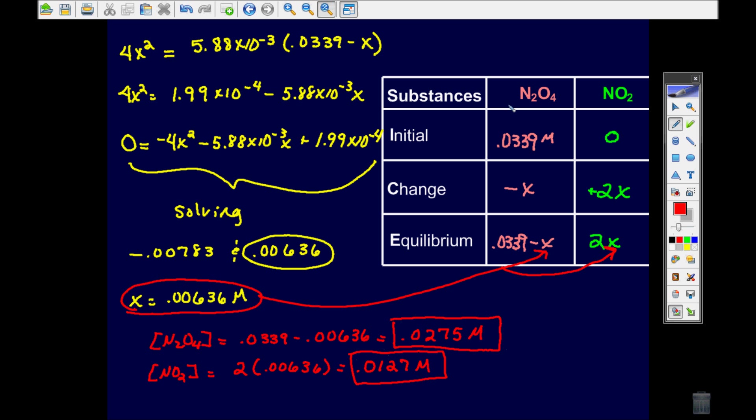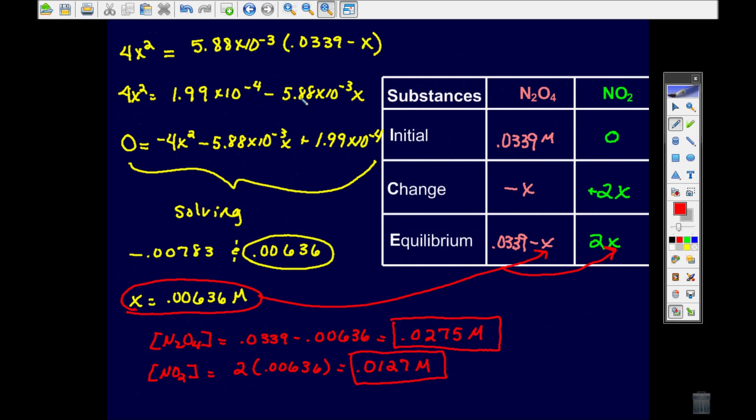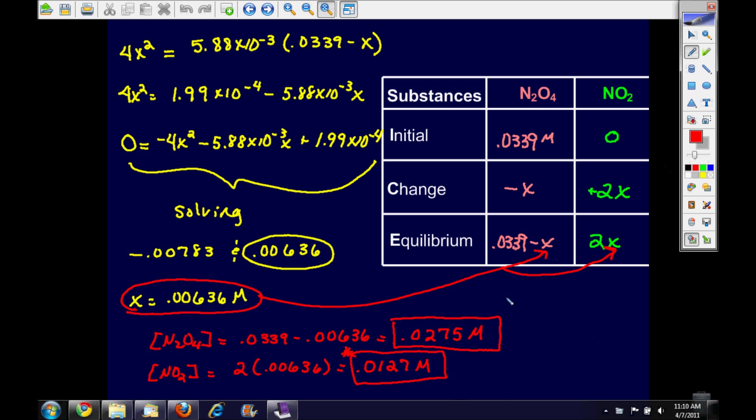So I'm going to go back to my problem and just make sure that I have finished. It says calculate the amount of NO2 at equilibrium and the percentage of the original N2O4 that is dissociated. Well I'm not finished. I've got both equilibria concentrations. It actually asked me for this one.